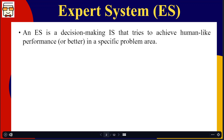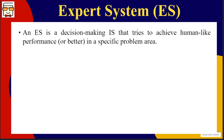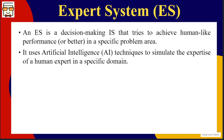Expert systems try to make decisions as good as human-like decisions. If a human were present in a given situation, the best decision that human could have taken — that capability is what the expert system tries to mimic. An expert system uses artificial intelligence techniques to mimic the expertise of a human expert in a particular problem domain, replicating the behavior of an expert specialized in that problem area.